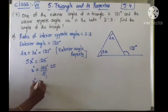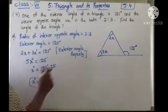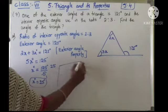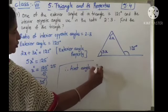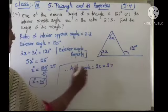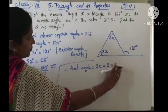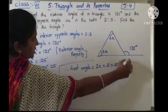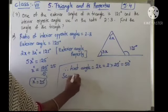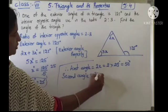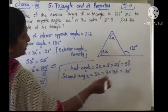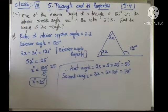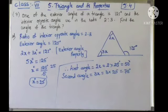x equals 125 divided by 5, which is 25. The first angle is 2x equals 2 into 25 equals 50 degrees. The second angle is 3x equals 3 into 25 equals 75 degrees. When you add 50 and 75 you get 125, confirming the exterior angle equals the sum of the two interior opposite angles.